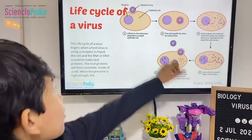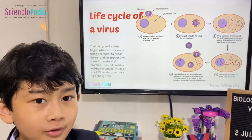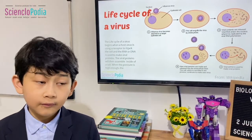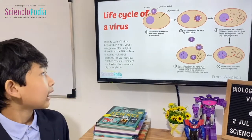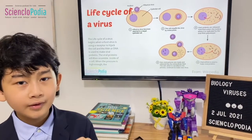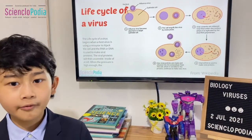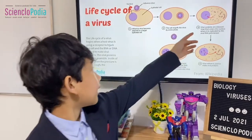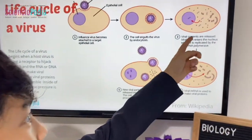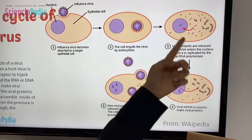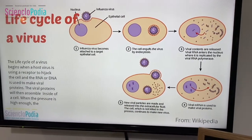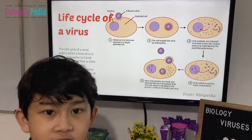The cell eats the virus through phagocytosis, but the cell does not know the virus is something bad. Once it eats it, the virus will begin to do the bad thing. The virus has DNA or RNA, and that DNA or RNA will enter the nucleus to copy itself.